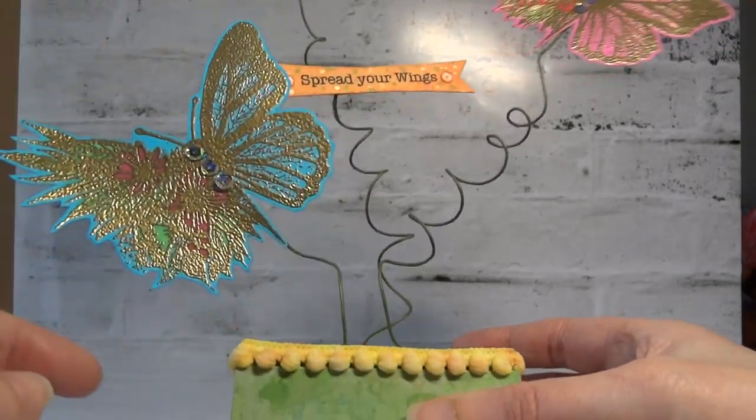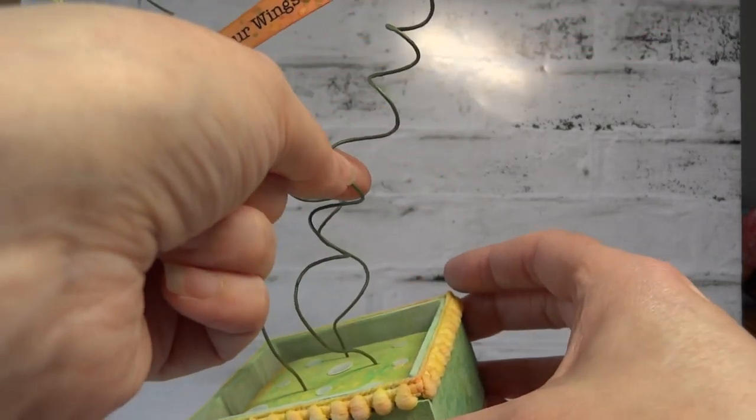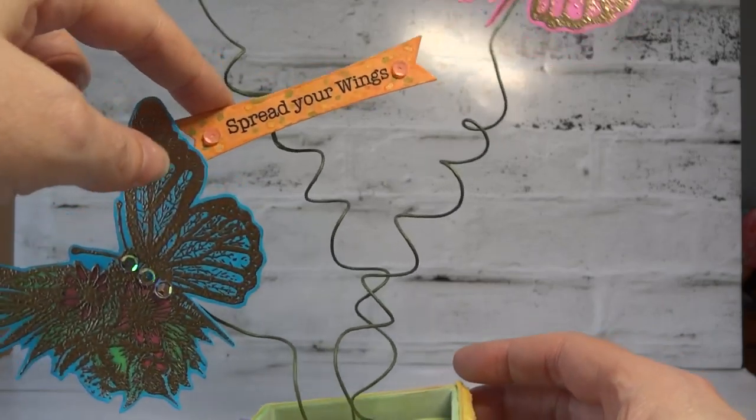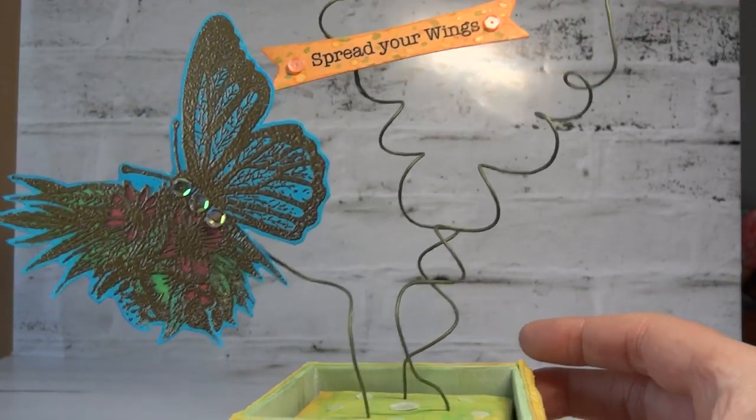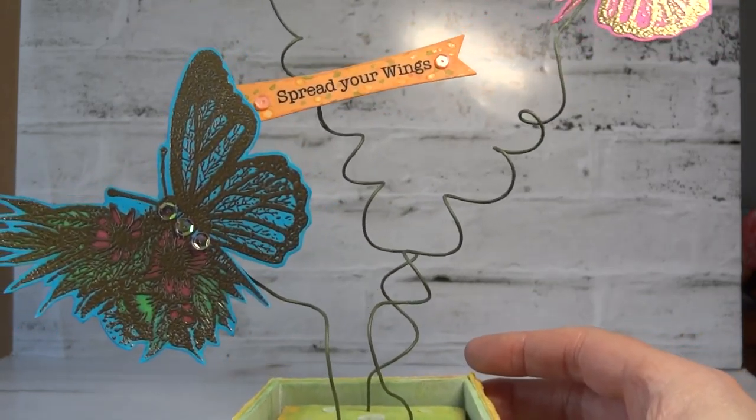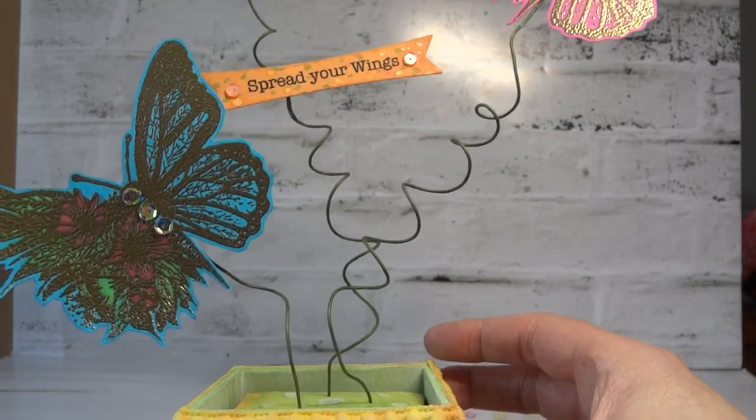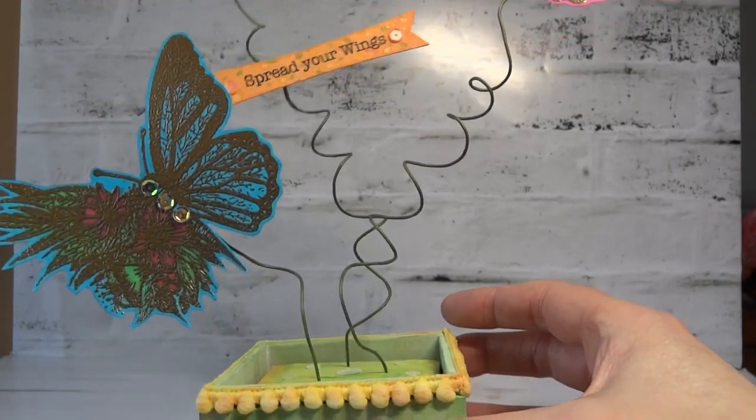I cut them out and attached them to some green tape-covered florist wires. This here is the sentiment that's also on a new stamp set from Pearlywinks. It has a number of stamps on there such as congratulations and happy birthday. I chose this one, 'Spread Your Wings,' because it seemed apt to go with the butterflies.